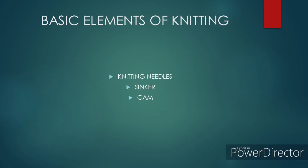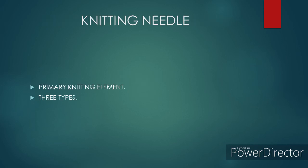Basic elements of knitting: Before learning about knit fabric structures, we need to learn about the basic elements of knitting. There are three basic elements involved in the knitting process: knitting needles, sinker, and cam. The knitting needle is the first and primary element. They generally have a long shaft that tapers at their end. The long shaft holds the active stitches of the fabric to prevent them from unraveling, whereas the tapered ends are used to form new stitches. There are three different types of knitting needles available commercially.